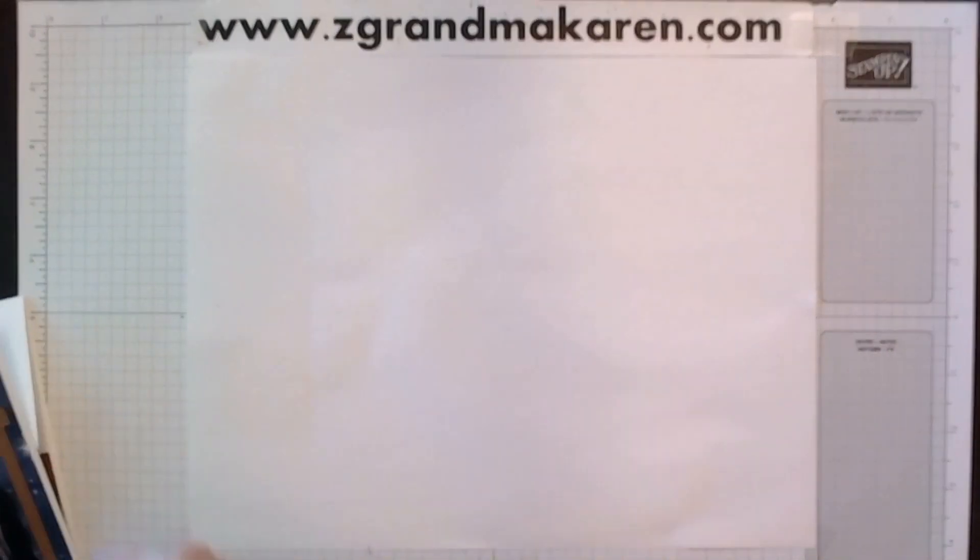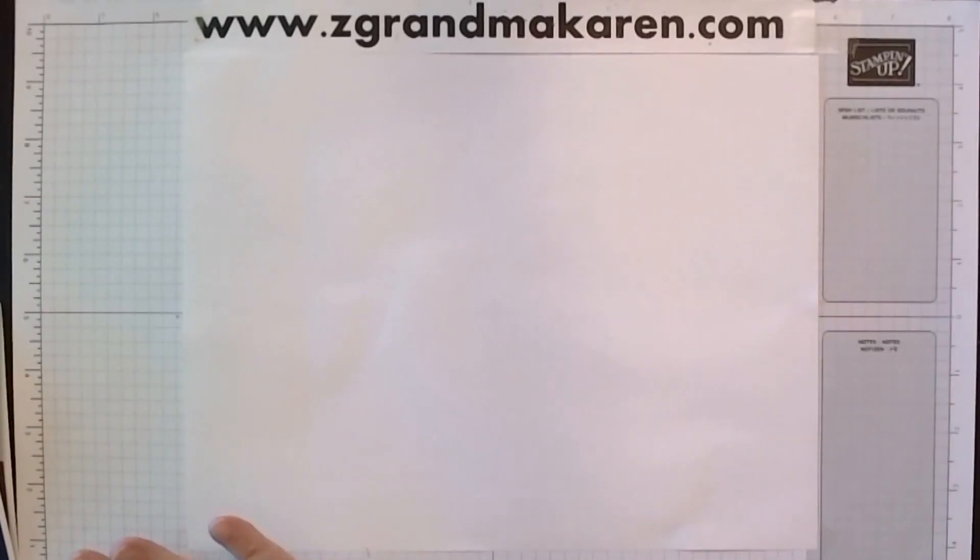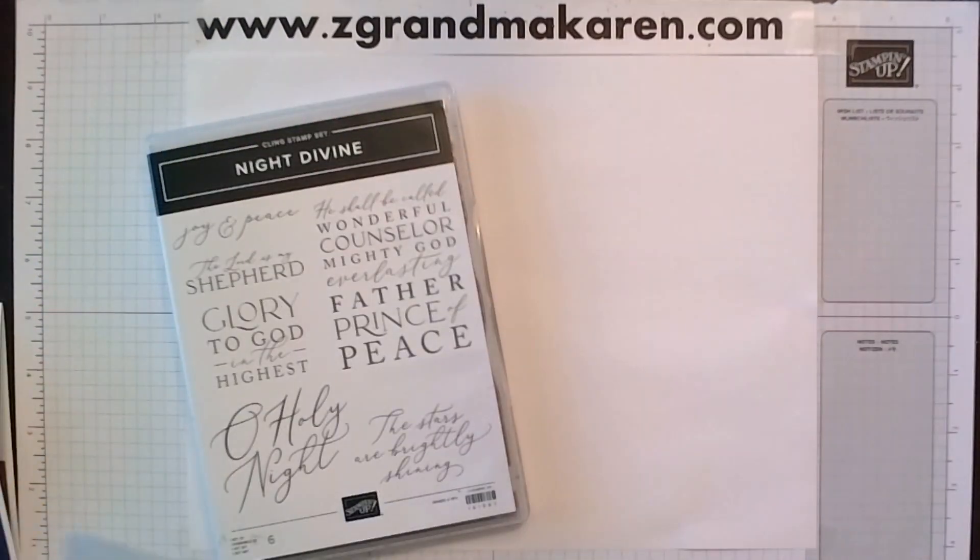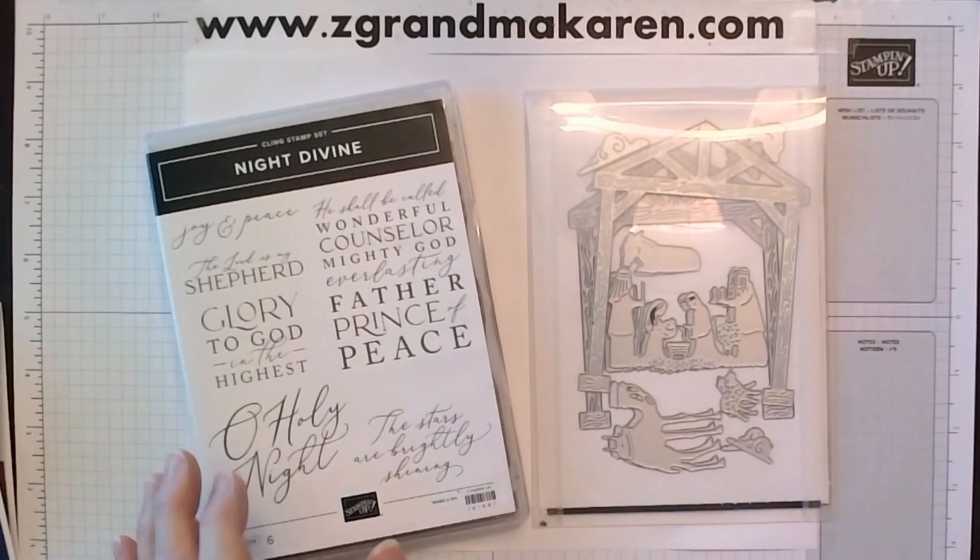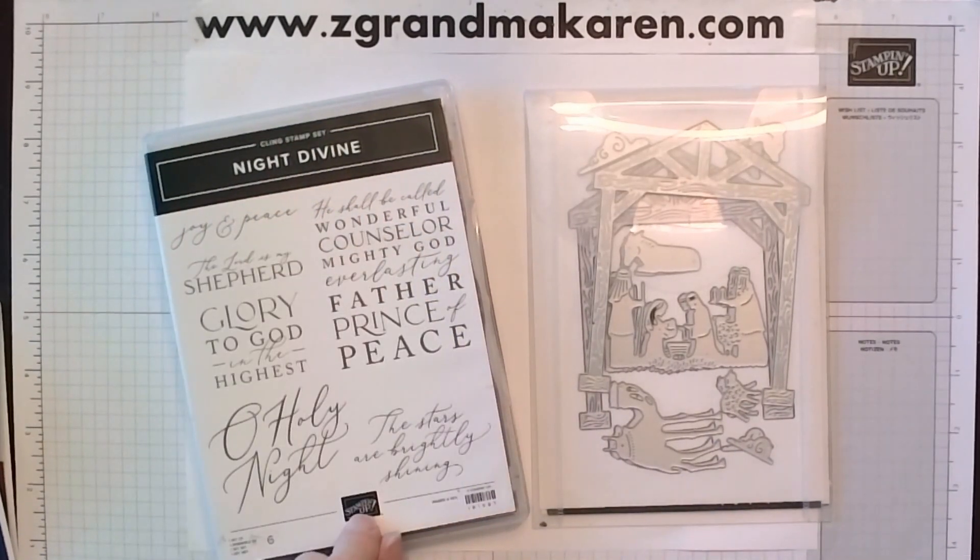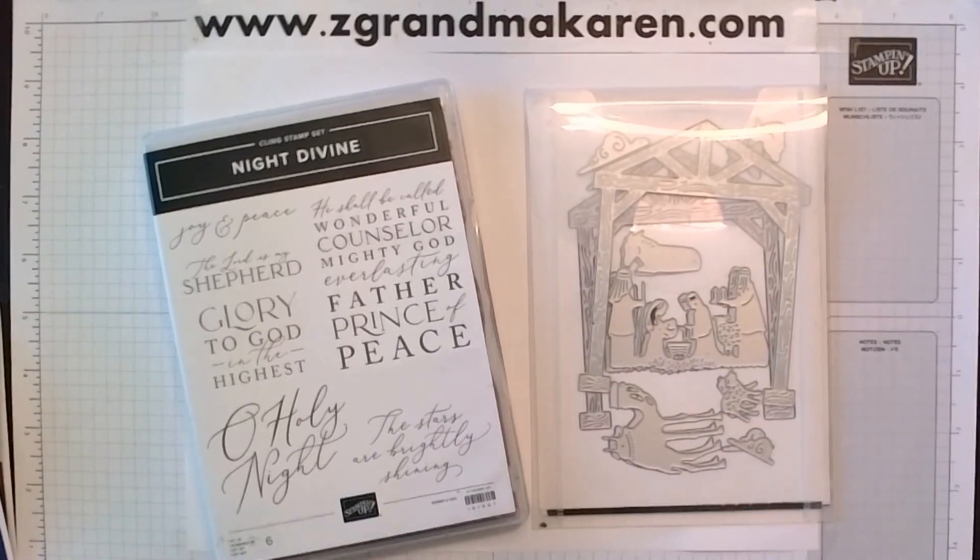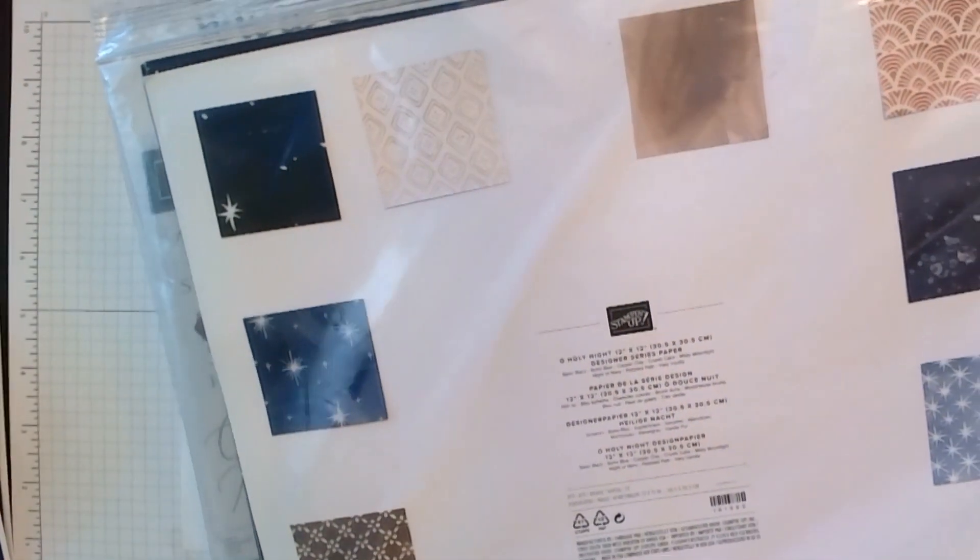This is such a fun set to work with. It's using the Oh Holy Night bundle. And that is the stamp set and the dies. And this stamp set is just words and then the dies are all of the manger set. There is also paper that matches it and this will be retiring. It's called Oh Holy Night.